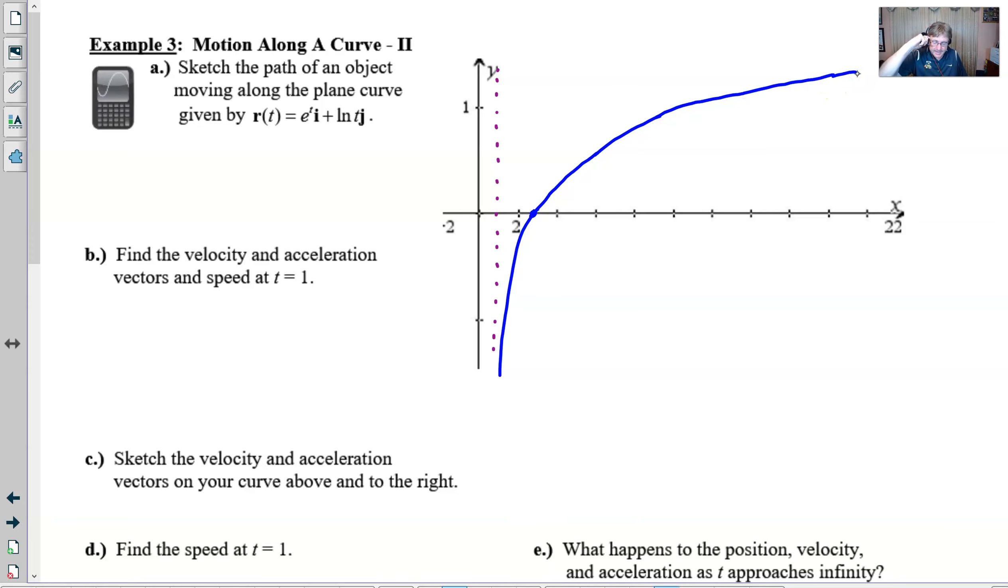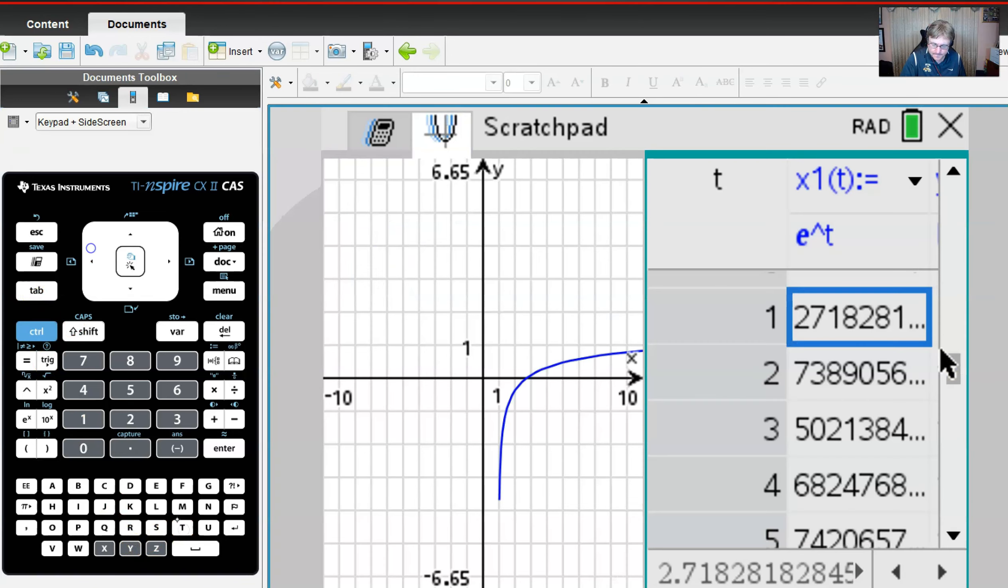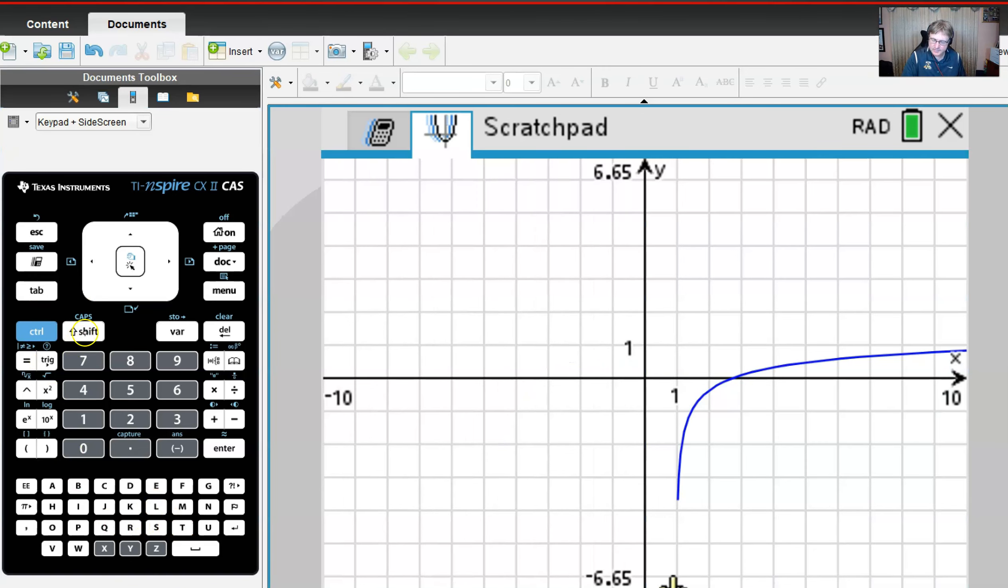You have to know that there's this vertical asymptote at one. Notice the scale change as well. Three is right about here so 2.7 would be maybe there. As the t values get larger, the x values are getting larger as well.